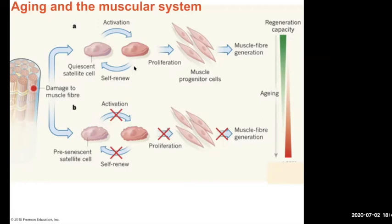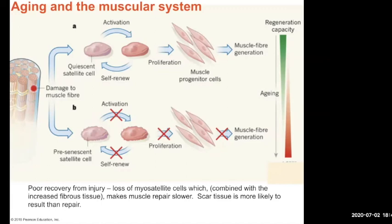One thing that happens when you get older is that those stem cells, which are normally activated when there's damage or exercise-related stress, slow down. This happens all over your body — cell activity starts to slow down. So when you get injury or when you're trying to grow muscle, it's a lot slower. This whole self-renewal and proliferation is slowed down, so you get less fiber generation. It doesn't stop — you could still grow muscle — but the whole process is slowed due to myosatellite cell activity declining.